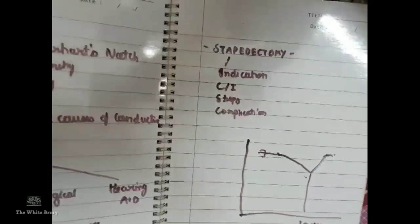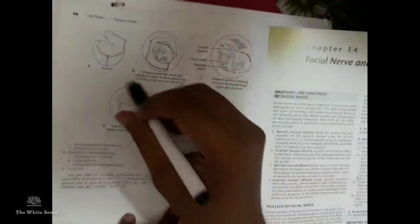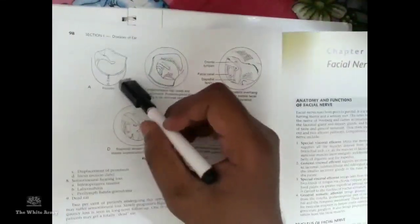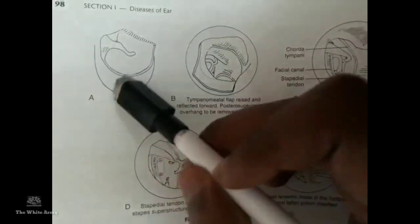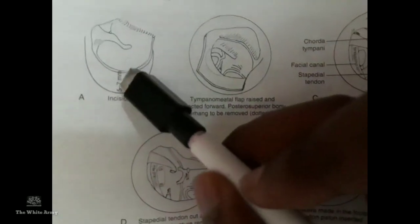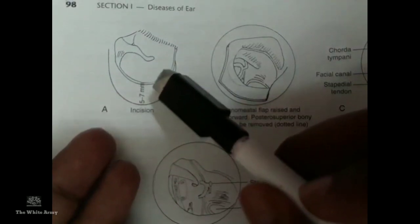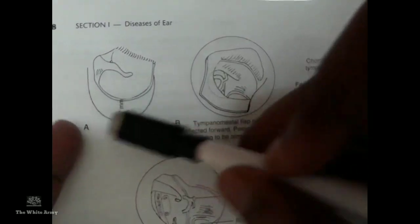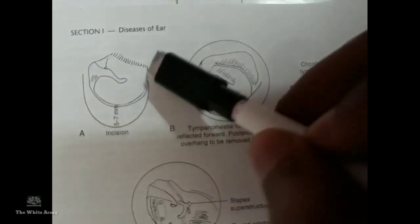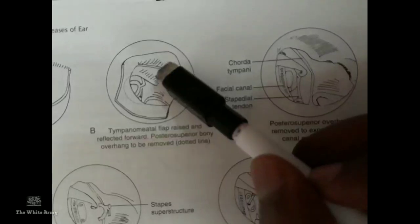The steps of stapedectomy or stapedotomy are discussed with reference to operative images. First, a tympanomeatal flap is made with an incision 5 to 7 mm from the annulus, running from 12 o'clock to 6 o'clock. This flap is raised along with the tympanic membrane and reflected laterally to expose the middle ear structures including the incus, stapes, promontory, and round window.